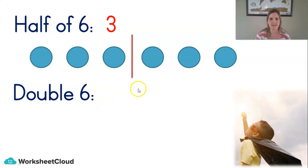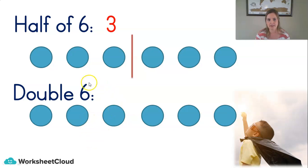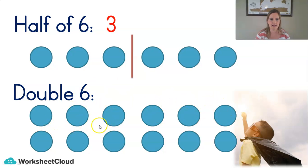What is double six? Do you know what double means? Say we've got those six smarties — then we say six plus six, and that will give us double. Let's make another row. There's six plus six. How many is that? One, two, three, four, five, six, seven, eight, nine, ten, eleven, twelve. So double six is twelve. Well done.